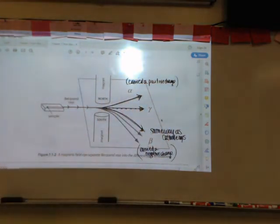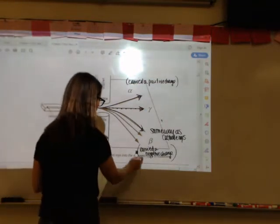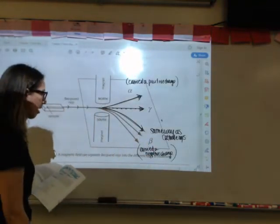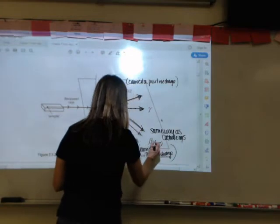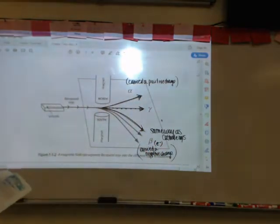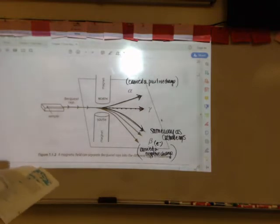Cathode rays were composed of electrons, which were negatively charged, which meant that beta radiation carried a negative charge. Since alpha radiation was deflected in the opposite direction, it obviously carried a positive charge. Bacquerel used the technique of J.J. Thomson's to measure the charge to mass ratio of beta radiation. The result that he obtained was that this was the same as it was for electrons. So that meant that beta radiation were electrons.